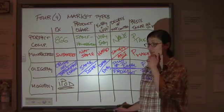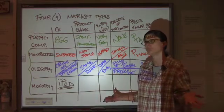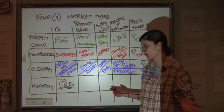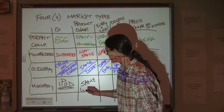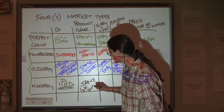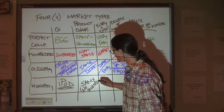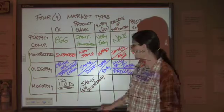Now, product characteristics? Well, it's all the same, because they're the ones producing it. It has no substitutes. No substitutes. If you want an iPod, you're going to buy it from Apple.